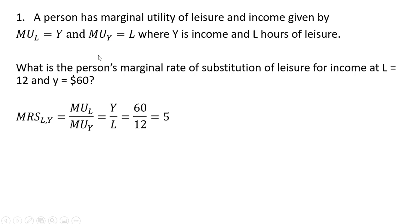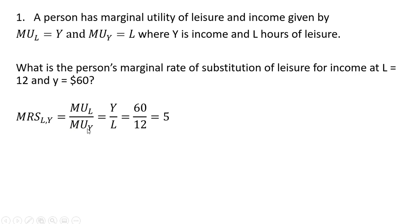Problem one: A person has marginal utility of leisure and income given by the following. The marginal utility of leisure equals y and the marginal utility of income equals l, where y is income and l is hours of leisure. What is the person's marginal rate of substitution of leisure for income at l equals 12 and y equals 60? We form our marginal rate of substitution as the ratio of the marginal utility of leisure to the marginal utility of income.